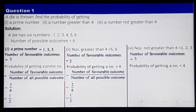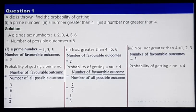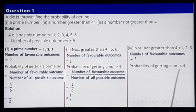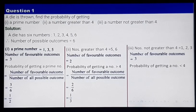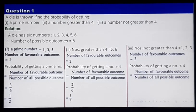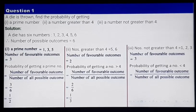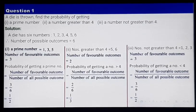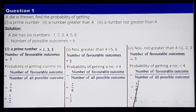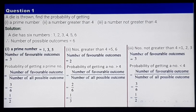The probability of getting a number not greater than 4 — not greater than 4 means less than 4. This equals number of favorable outcomes divided by number of all possible outcomes: 3 divided by 6, which is nothing but half. You may pause the video to note it down.